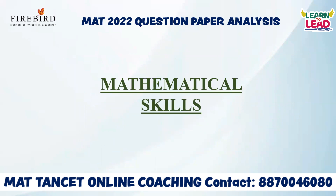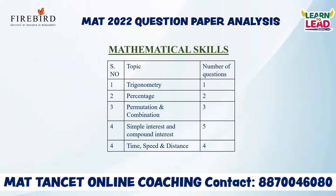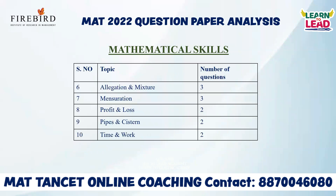Let us start with the analysis of Mathematical Skills. In Mathematical Skills, there are totally 40 questions covering all topics. Topic-wise: Trigonometry — one question; Percentage — two; Permutation and Combination — three questions; Simple Interest and Compound Interest — five questions; Time, Speed and Distance — four questions; Allegation and Mixture — three questions; Mensuration — three questions.